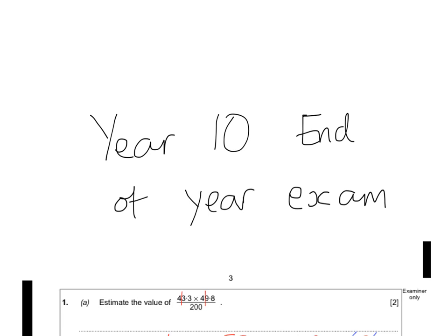Going through the end of Year 10 exam, this is Paper 1. The first question was: estimate the value of 43.3 times 49.8, all divided by 200. When you want to estimate, make sure you round these to one significant figure.